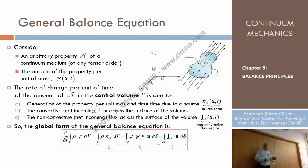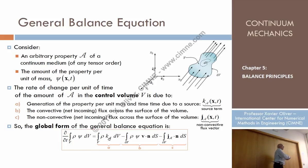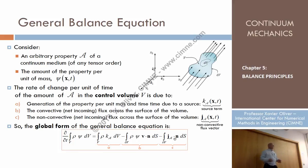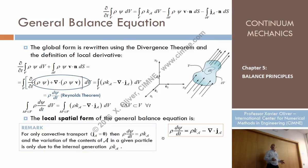In global form, the principle states: the rate of change of the property in a volume is due to, first, the change of the properties of the particles in the volume; second, the convective flux of the particles; and third, the non-convective flux of the particles. Now we have this equation not at the integral level but at the local level. And we can interpret the term here: it is the rate of change of the property per unit of volume in a certain particle.